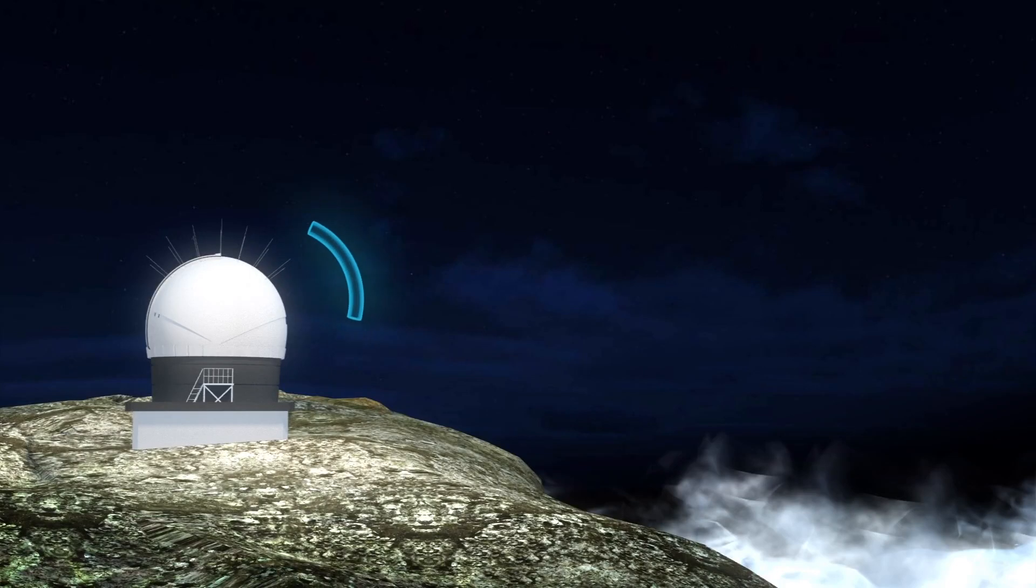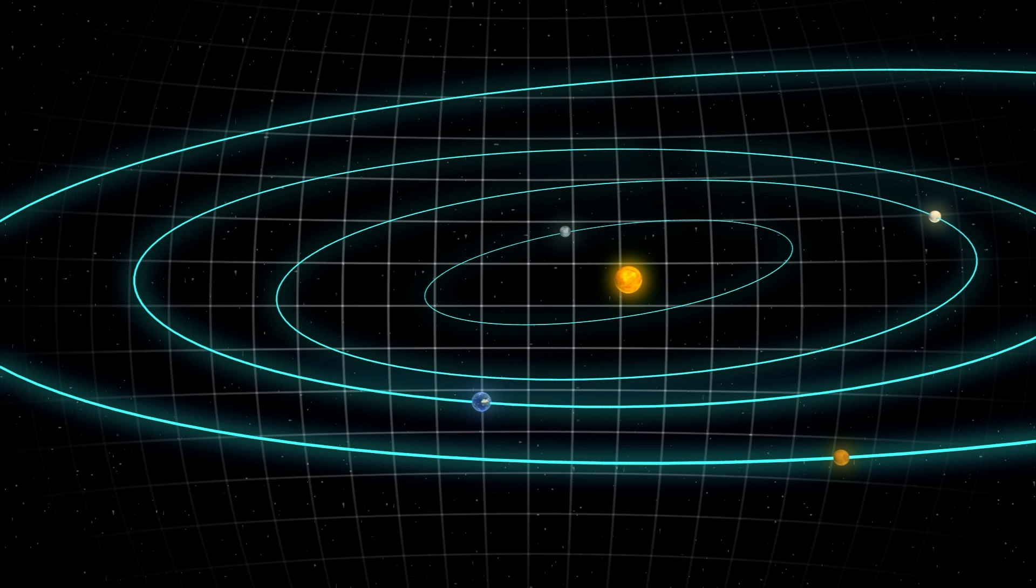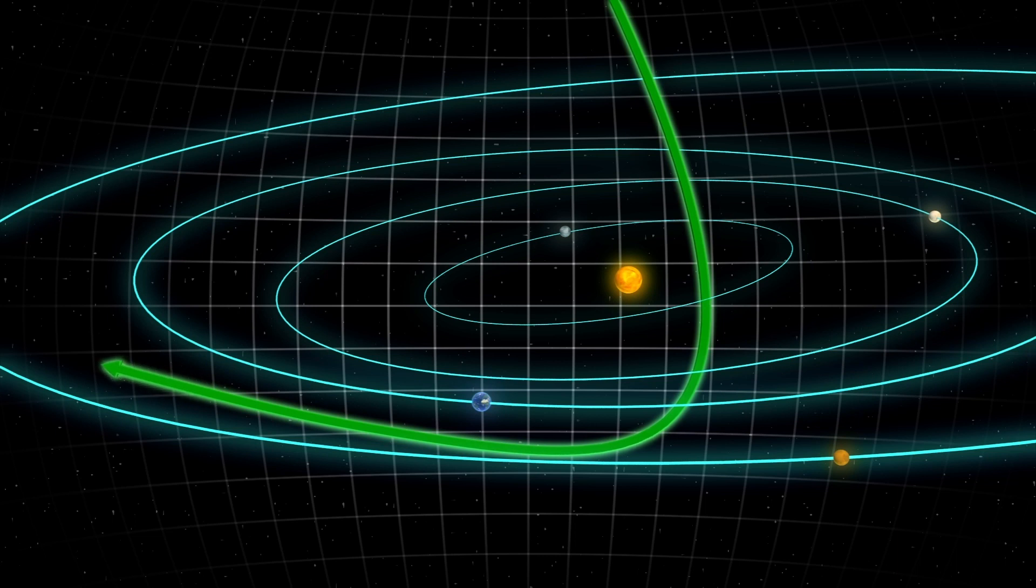Oumuamua was first observed by the Panoramic Survey Telescope and Rapid Response System in Hawaii in October of 2017. Research published in the journal Nature last year says it is the first interstellar object to enter our solar system and said it would travel inside it for over a year.